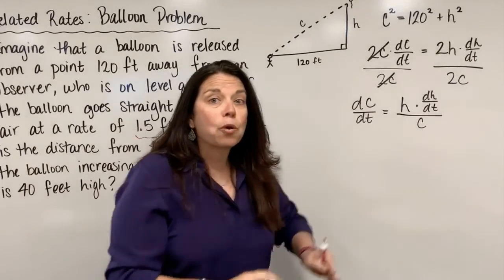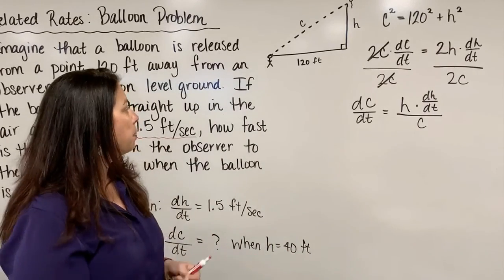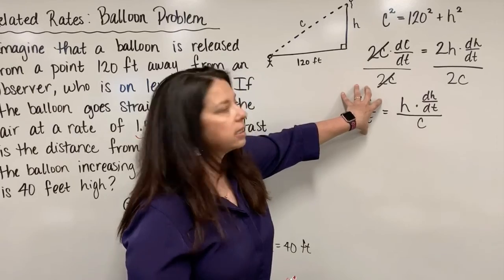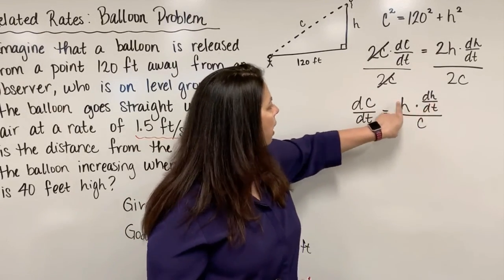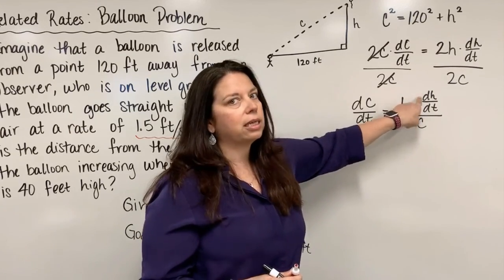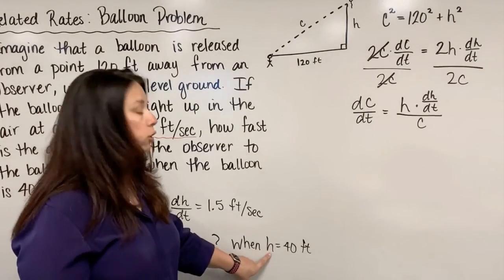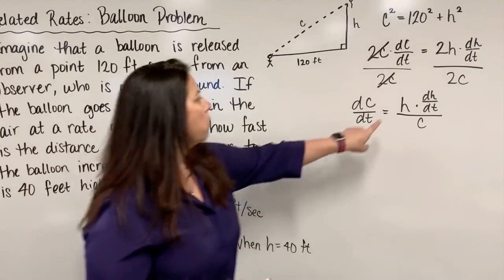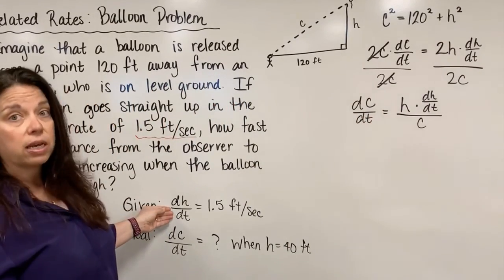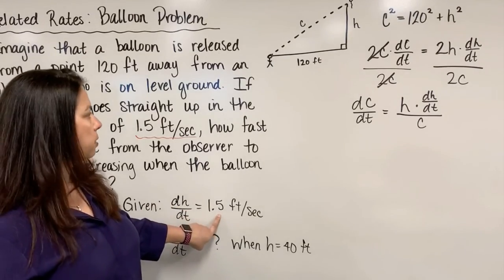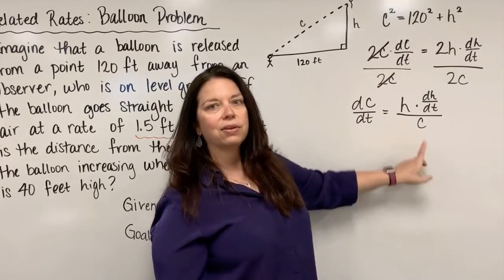Now at this point, it is safe to go ahead and plug in the values that you were given in the problem. The dC/dt is the part that I do not know. However, there are three quantities over here: h, c, and dH/dt. We know that we wanted to find dC/dt when h was exactly 40, so we know h is 40. dH/dt, that was given in the problem, that's 1.5 feet per second. So now I know these two quantities, but I wasn't exactly given c.